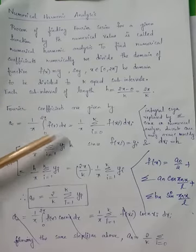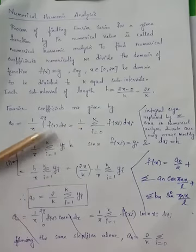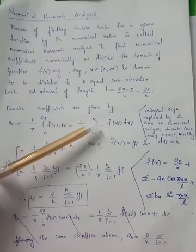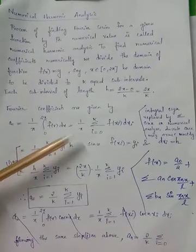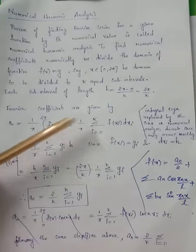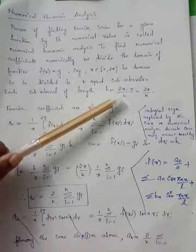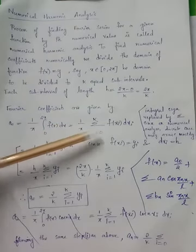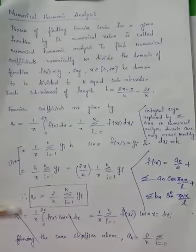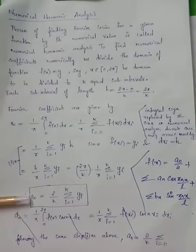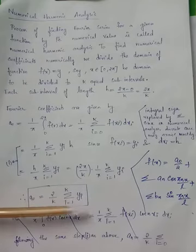When we have k number of sub-intervals, the summation ranges from i = 0 to k. f(x) is replaced by f(xᵢ) because at each xᵢ we know the output values. dx is replaced by dxᵢ, where dxᵢ denotes the equal length of each sub-interval h = (2π − 0)/k. Using these substitutions and denoting f(xᵢ) = yᵢ, we get the simplified form: a₀ = (2/k) Σᵢ₌₁ᵏ yᵢ.